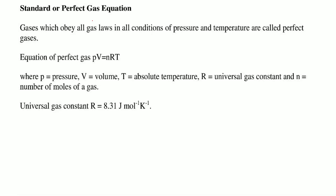The standard or perfect gas equation: gases which obey all the gas laws under all conditions of pressure and temperature are called perfect gases. The equation of a perfect gas is PV = nRT, where P is pressure, V is volume, T is absolute temperature, R is the universal gas constant, and n (sometimes written as μ) is the number of moles of the gas. R = 8.3 J/mol/K.